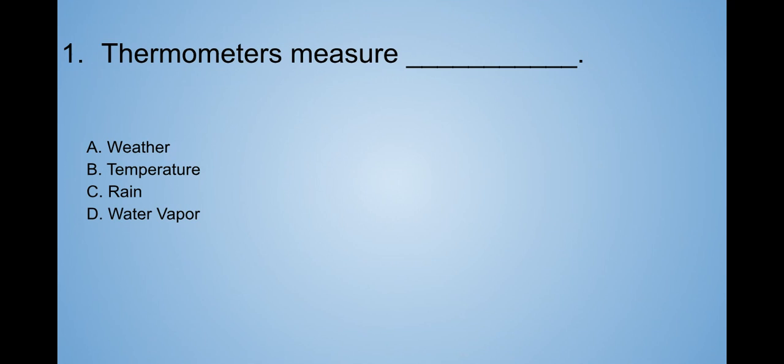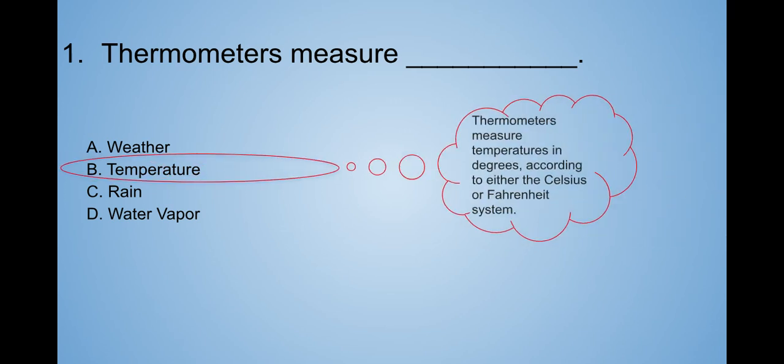Number one on the quiz. Thermometers measure blank. A. Weather. B. Temperature. C. Rain. D. Water vapor. Oh, I know this! A thermometer measures temperature! Thermometers measure temperature in degrees according to either the Celsius or Fahrenheit system.